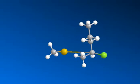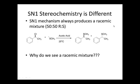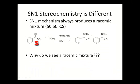Now let's talk about SN1 stereochemistry, which is different. The SN1 proceeds with racemization — you always get a racemic mixture. Here we have a benzylic substrate. Secondary benzylic, allylic, and tertiary substrates can all undergo SN1. We're doing this in acetic acid, a protic solvent. The two products are a racemic mixture: the one on the left is S and the one on the right is R.